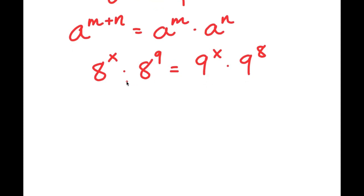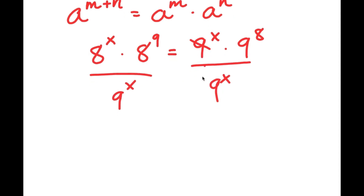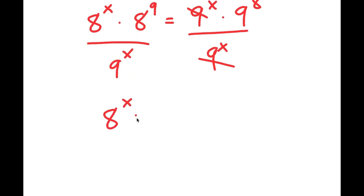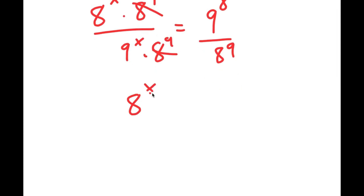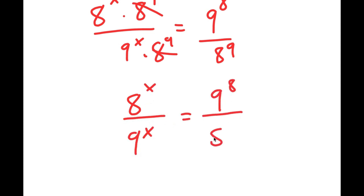From here, I'm going to divide both sides by 9 to the power of x. So then for my right-hand side, these two cancel out, and I get 8 to the power of x times 8 to the power of 9 over 9 to the power of x is equal to 9 to the power of 8. Then these two cancel out, and I get 8 to the power of x over 9 to the power of x is equal to 9 to the power of 8 over 8 to the power of 9.